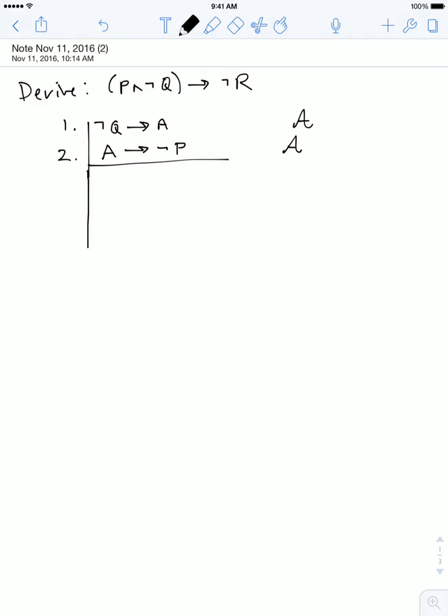Okay, as always, we begin by asking ourselves the following question. If I look at the sentence I'm trying to derive and call it the target sentence, I ask myself, does the target sentence appear as a component sentence anywhere in my primary assumptions? And here the answer is obviously no.